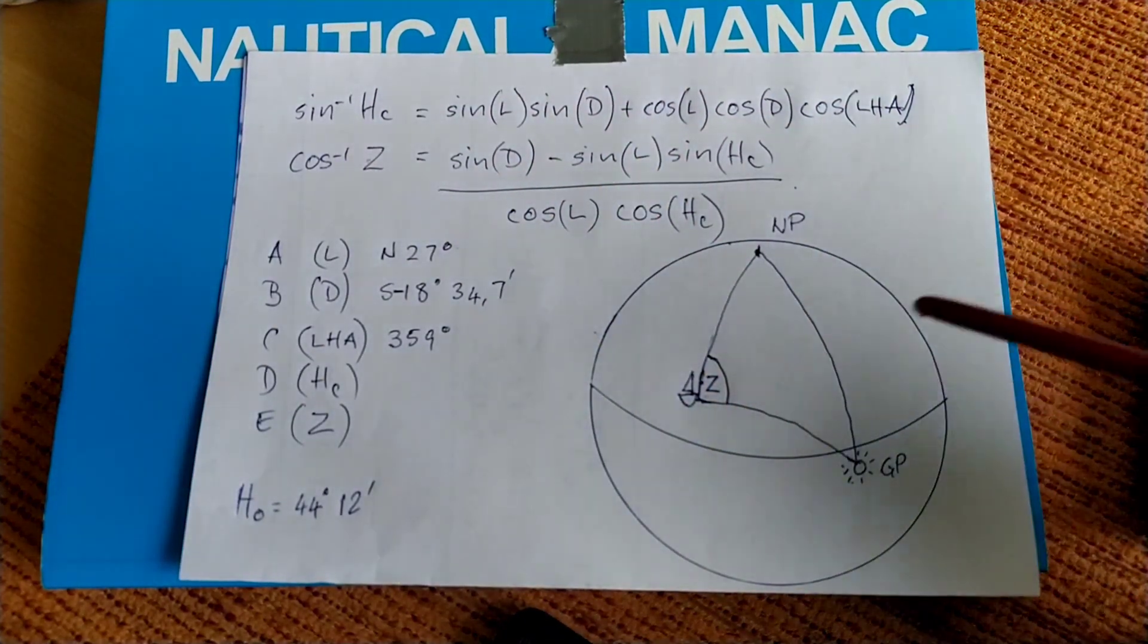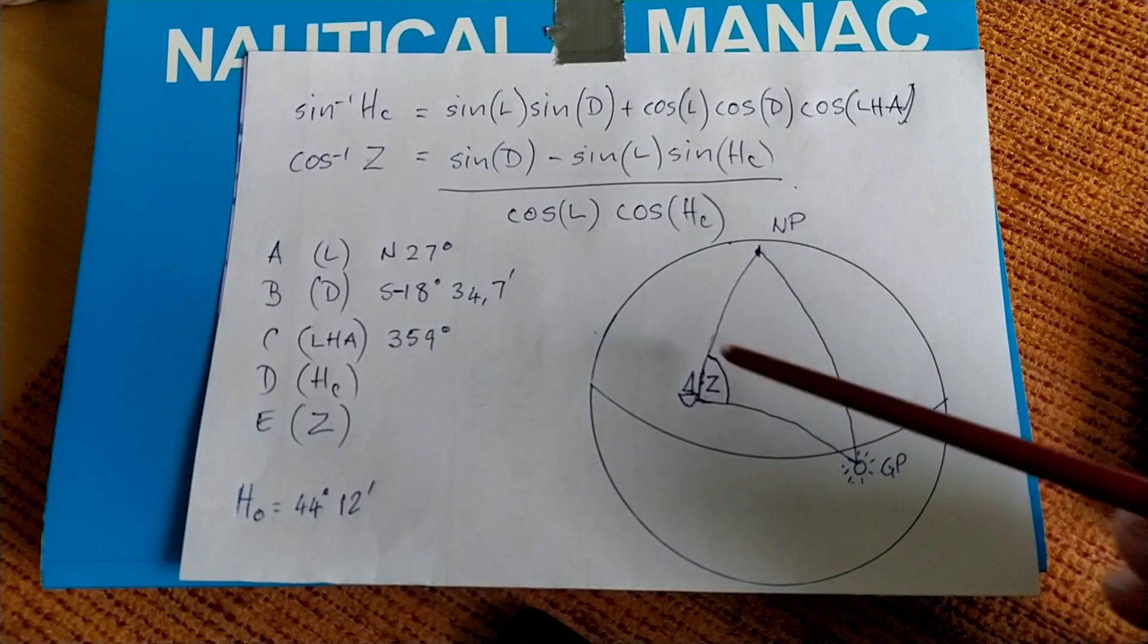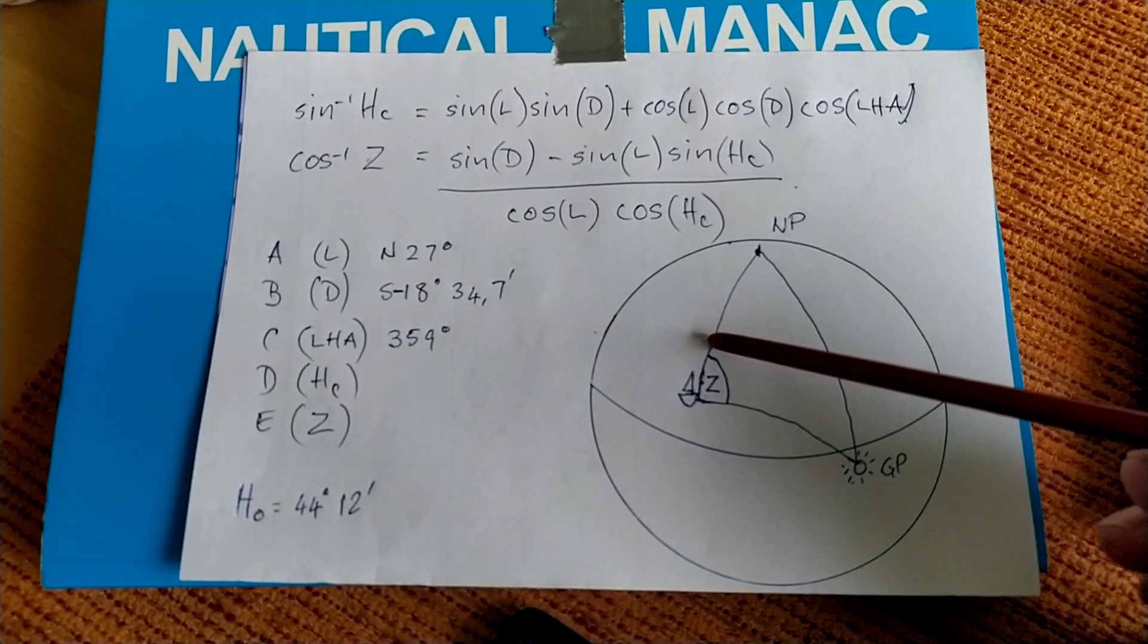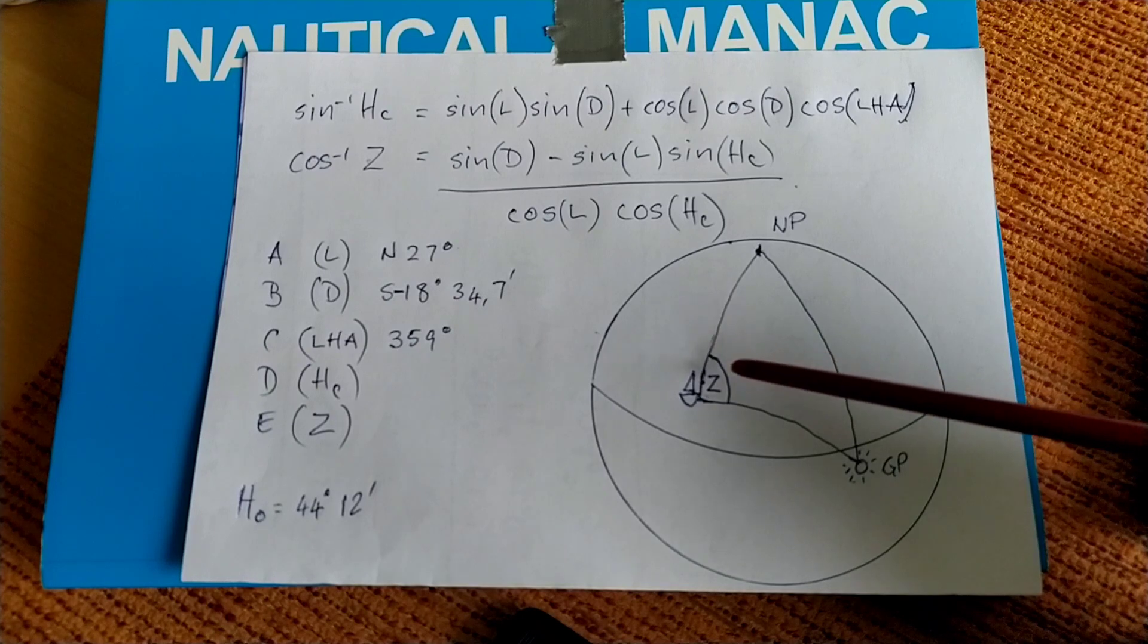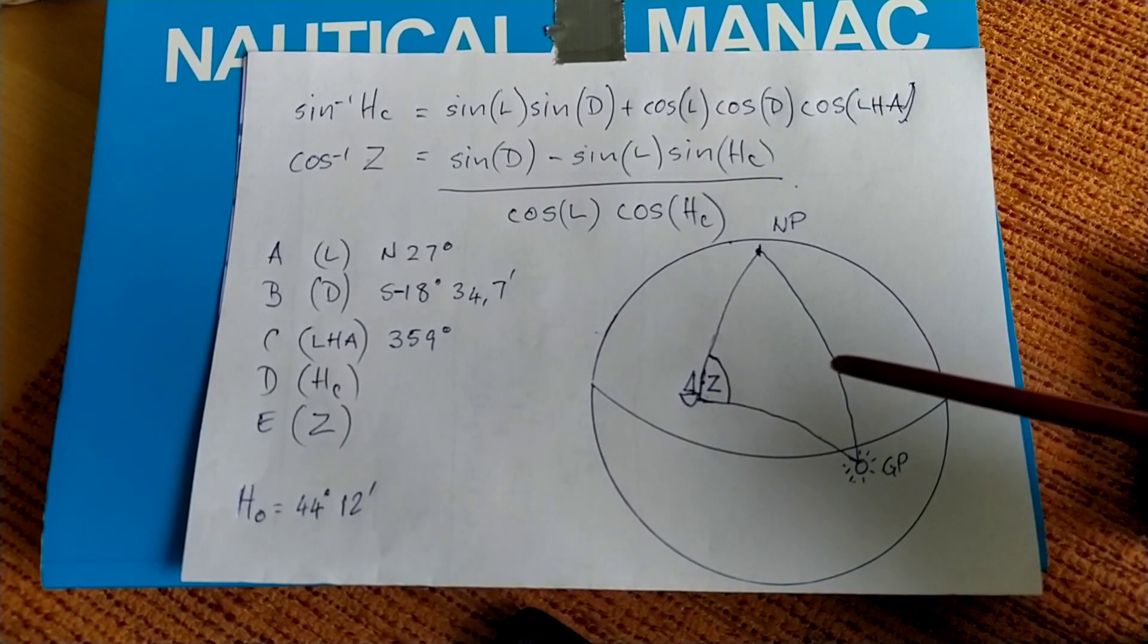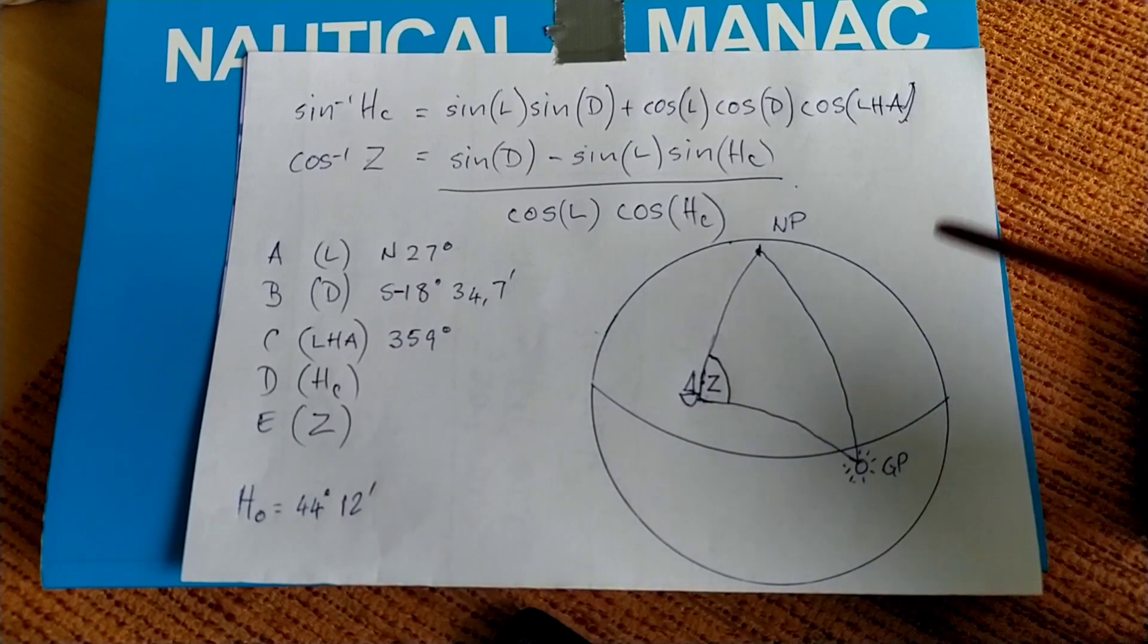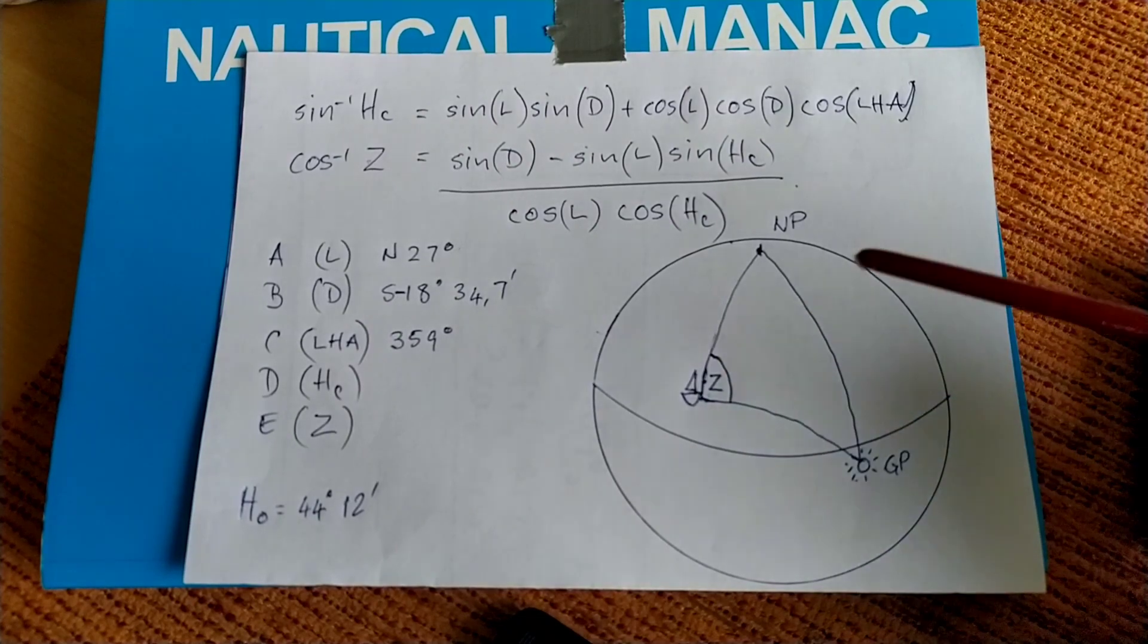In this instance, the azimuth angle Z is equal to true azimuth ZN. ZN is always calculated from 12 o'clock and in a clockwise direction. In this instance, because it's a morning sight and we have an observer in the northern hemisphere with an LHA greater than 180 degrees, Z is equal to ZN. So it makes it a little bit easier.